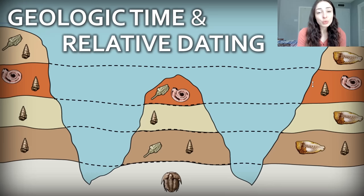We can assign numerical ages to rocks using absolute dating, but absolute or radiometric dating only works on certain types of rocks. For rocks that absolute dating does not work on, we have to use what's called relative dating. That's what I'll be talking about in this video, along with geologic time and the timescale in general.